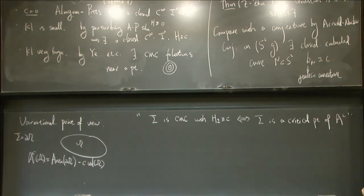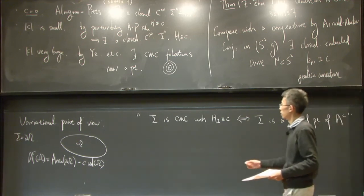So our approach follows this idea. We try to develop a partial Morse theory for this new functional, generalizing the corresponding theory by Almgren and Pitts for the area functional. So that's a min-max construction.